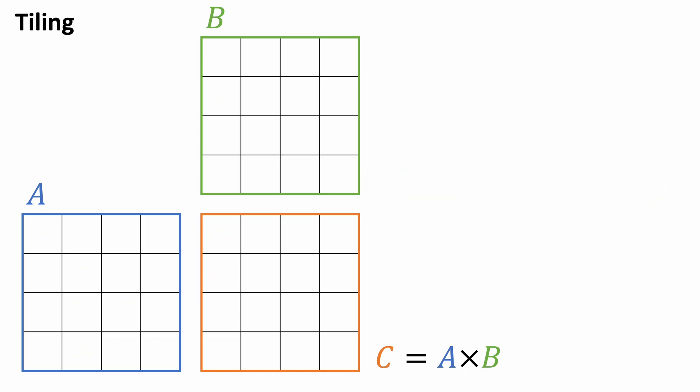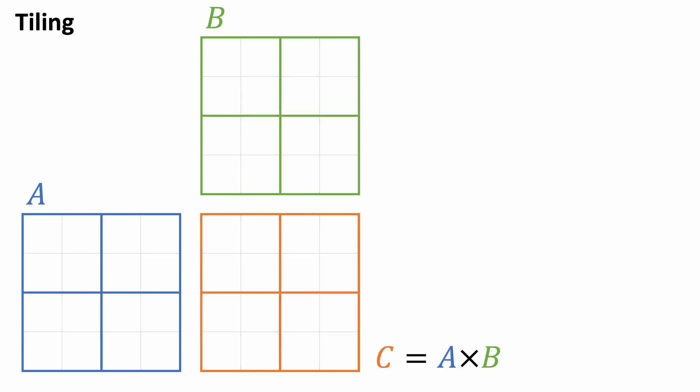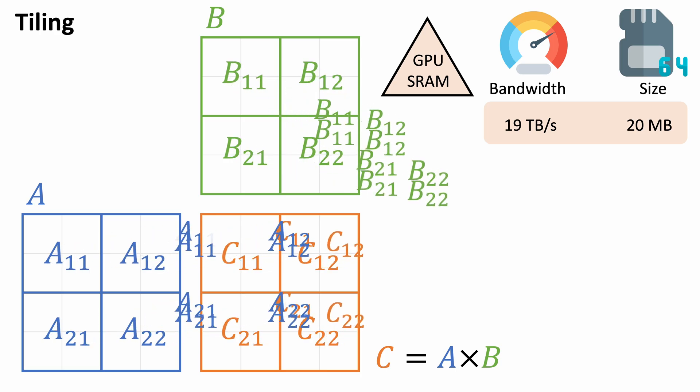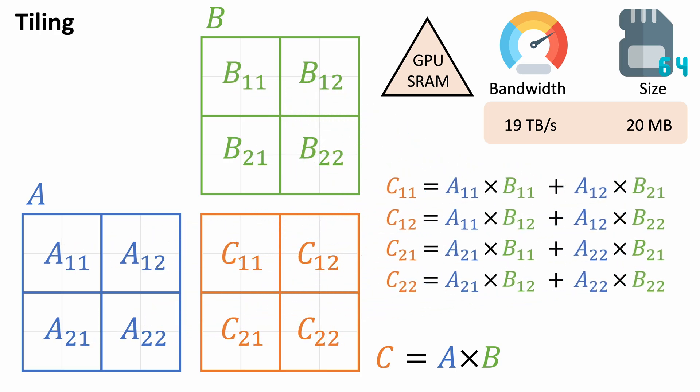To complete the matrix multiplication, we partition the matrix A, B, and C into 2x2 blocks. Now these 2x2 blocks can be moved to on-chip SRAM for faster processing. We then combine these partial tile-based matrix multiplications to get the final results. That's great progress!